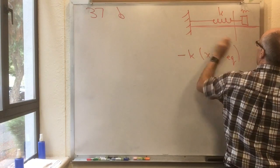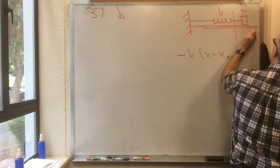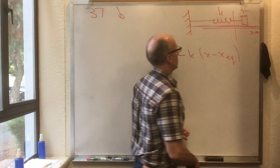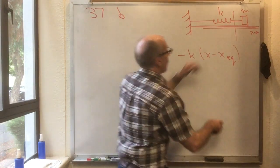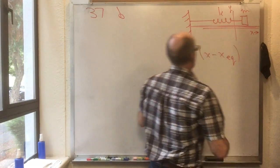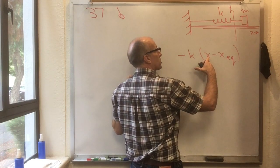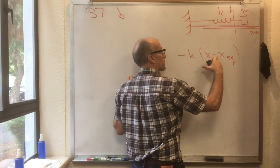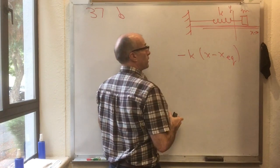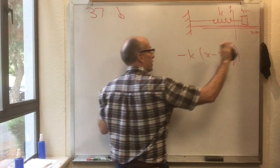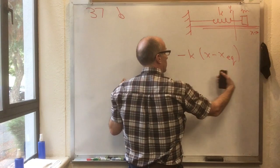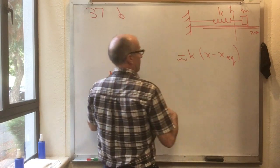Well because if I set up a coordinate axis such that this is the positive x direction and that's the positive y direction, then x minus x equilibrium is how much the spring has been stretched past its equilibrium point. And if it's been stretched to the right past its equilibrium point, then it's pulling left.